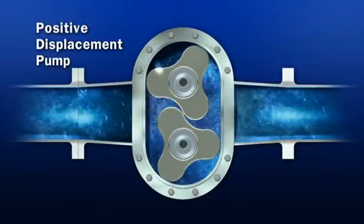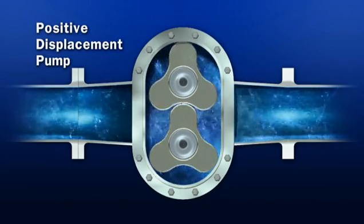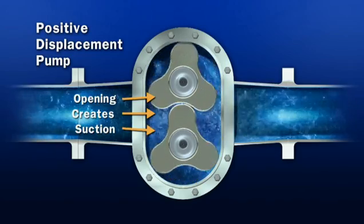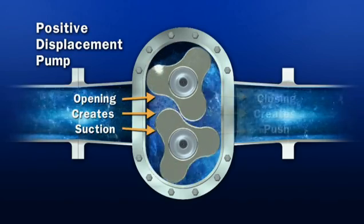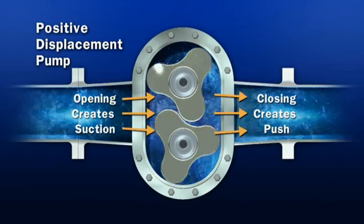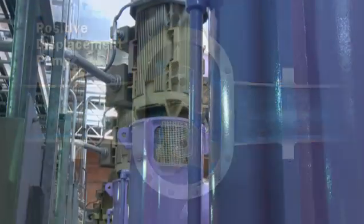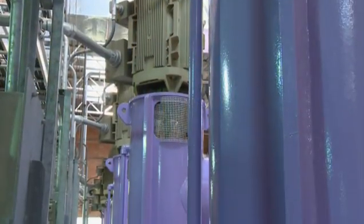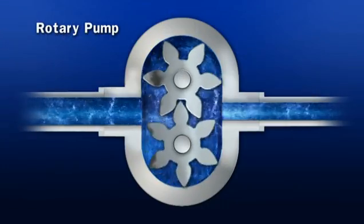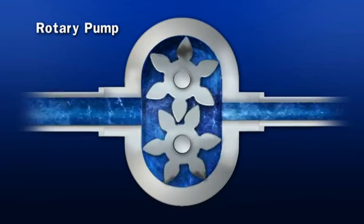Rotary pumps use rotating pump elements to move a known volume of liquid through the pump. PD rotary pumps will put out a constant volume of liquid regardless of the pressure and do not impart velocity to the pumped liquid. Metering is accomplished with rotary pumps by a calibrated pump element that creates a cycle count of revolutions and moves a dial or is recorded electronically.